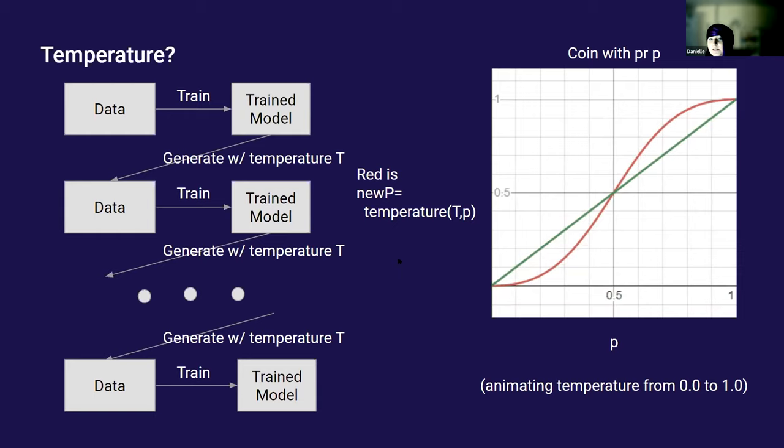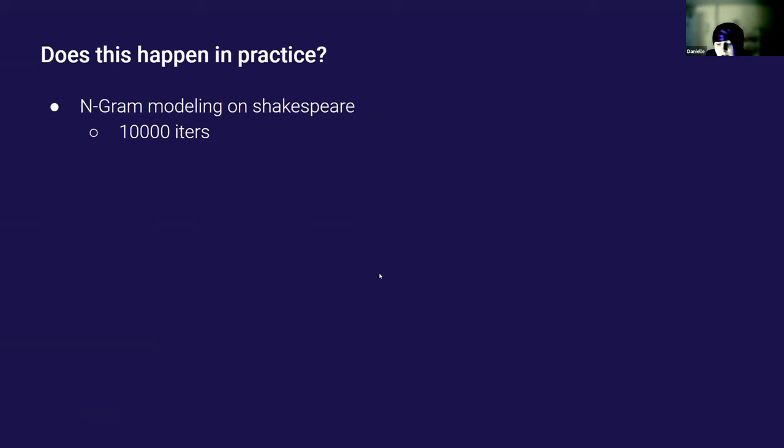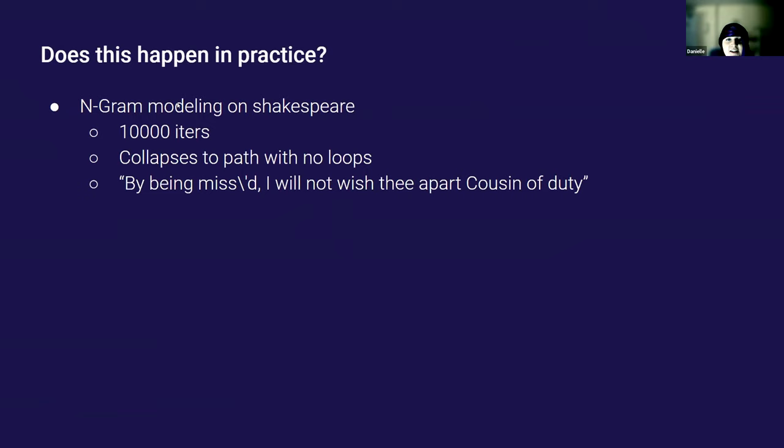There's some theory, but how does this apply in practice? First, we looked at n-gram models where you can actually run the theory. What the theory suggests is that it should collapse to a single path on the graph from start to end, and that path should have no cycles because if there is a cycle, one of those directions will be collapsed. In fact, that's what we found. After 10,000 iterations, it collapsed to 'by being missed I will not wish the apart cousin of duty.'